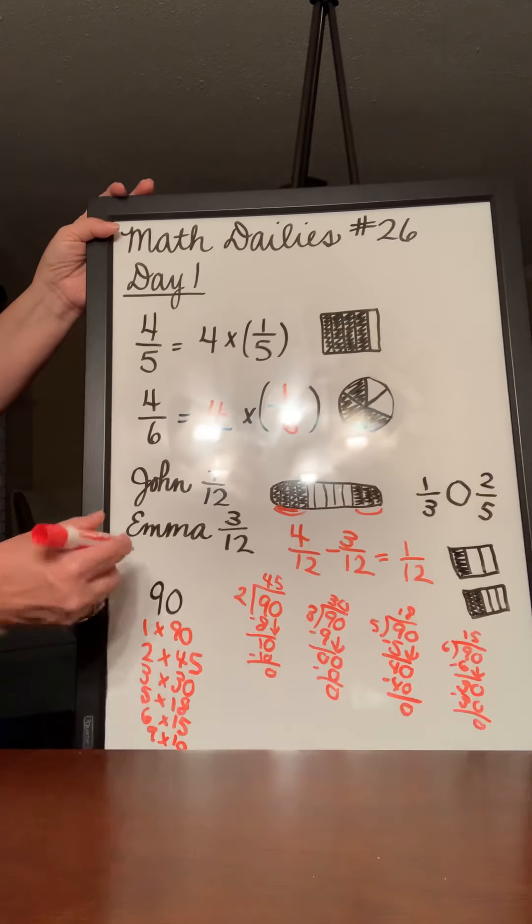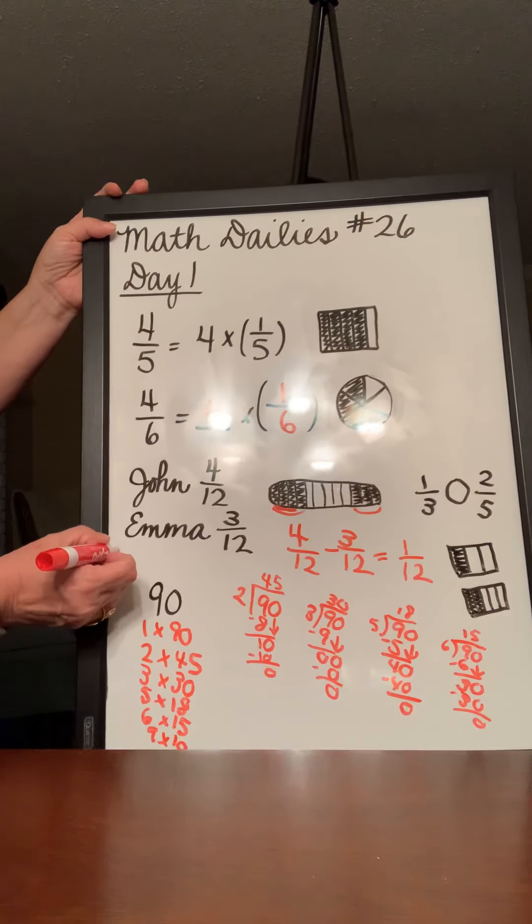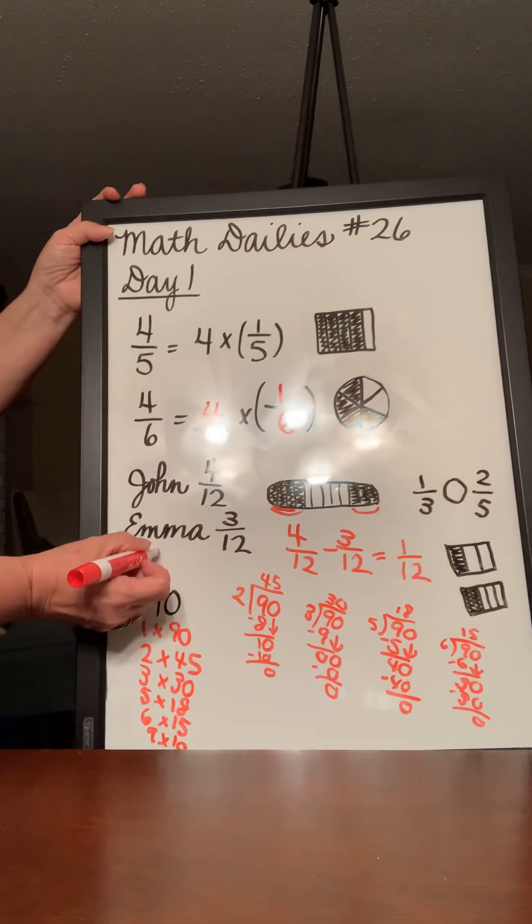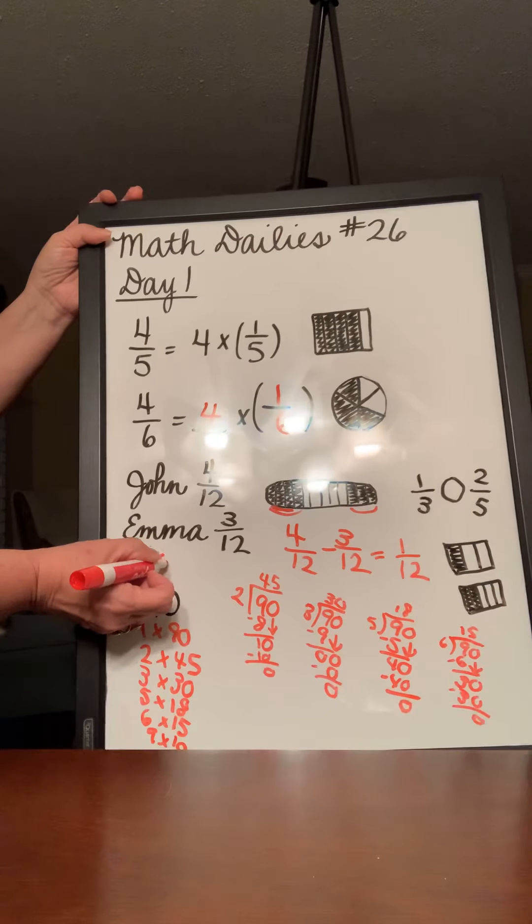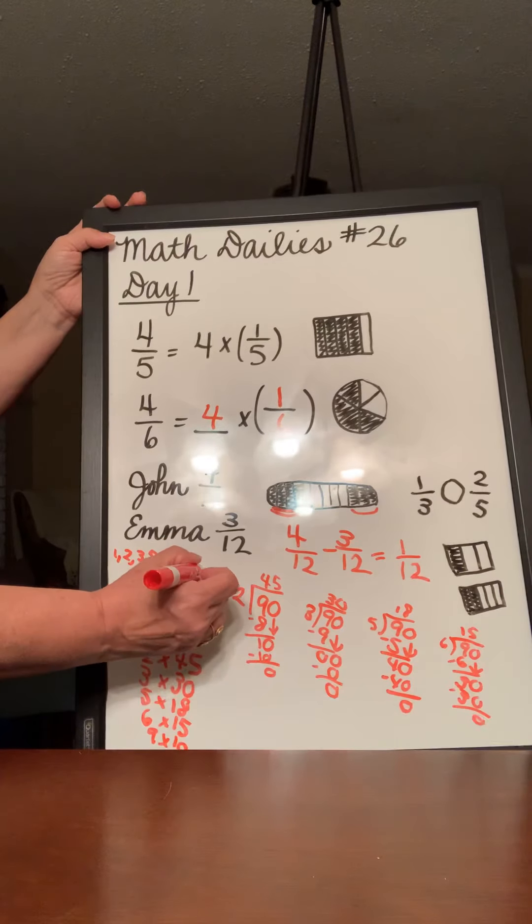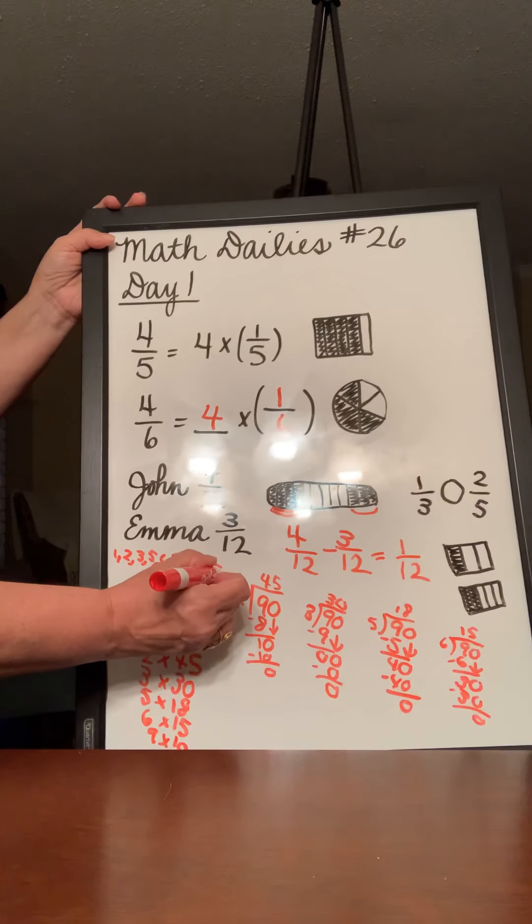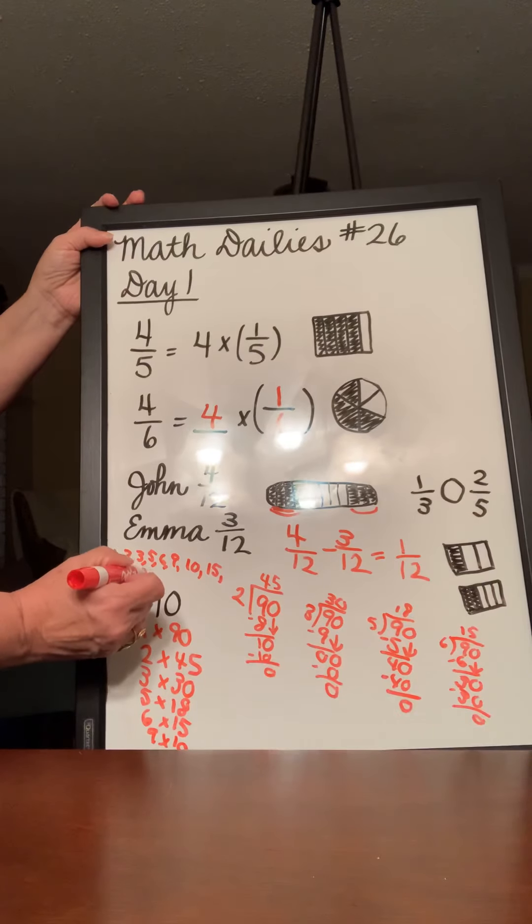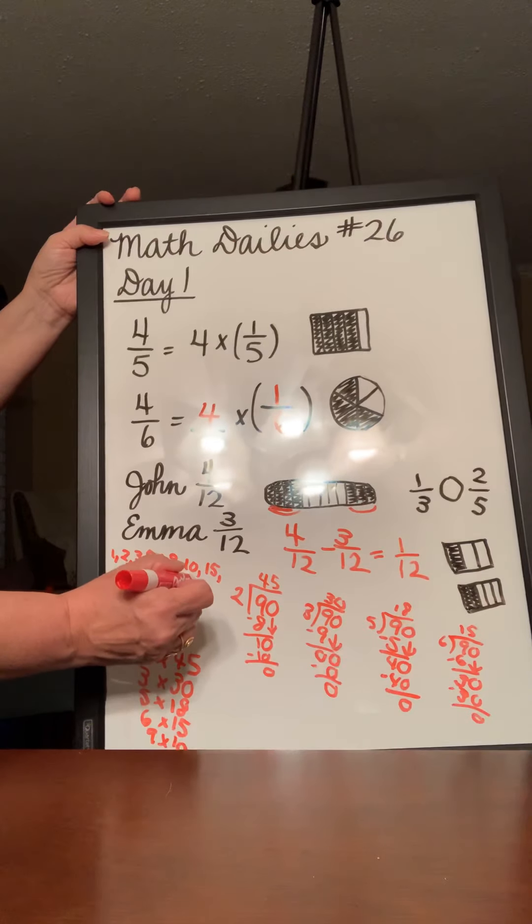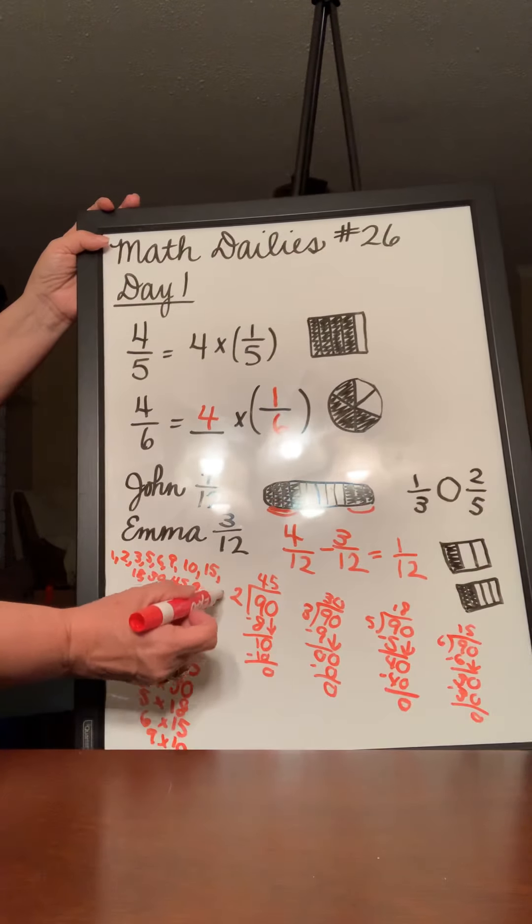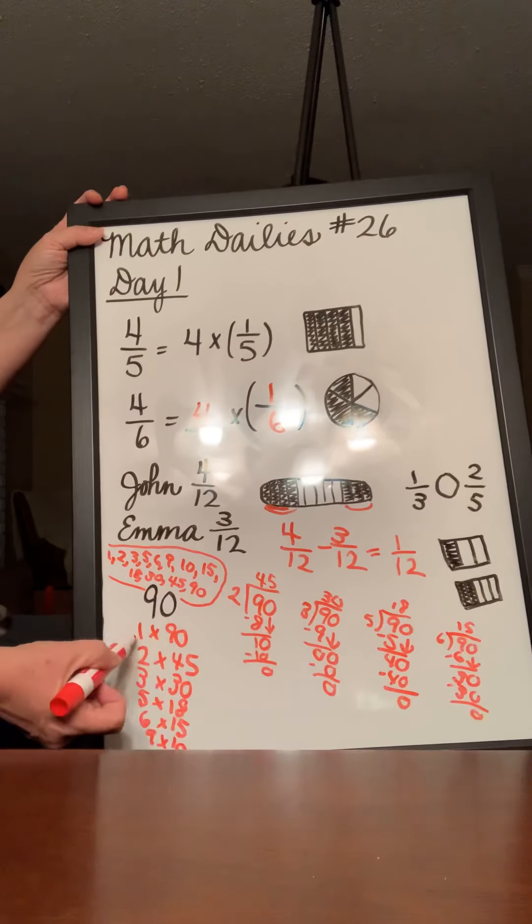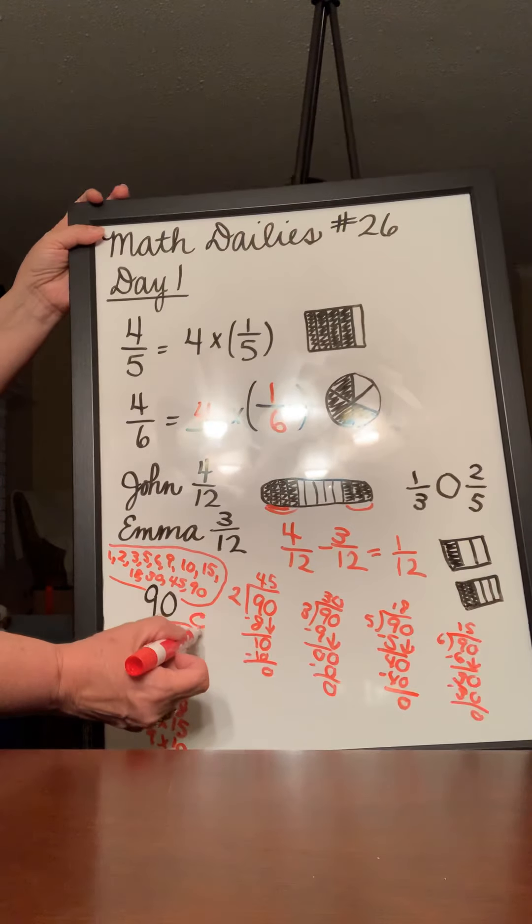So it has a lot of factors. So we're going to list them like this from least to greatest. 1, 2, 3, 5, 6, 9, 10, 15. I'm going to have to drop down: 18, 30, 45, and 90. So all of these are factors of 90. And then we know because it has more than just the one, it is composite.